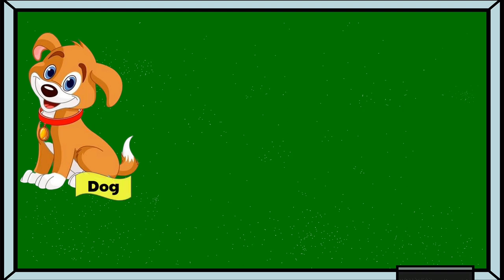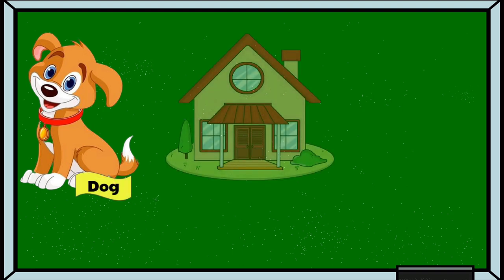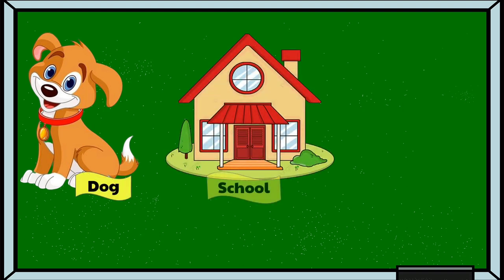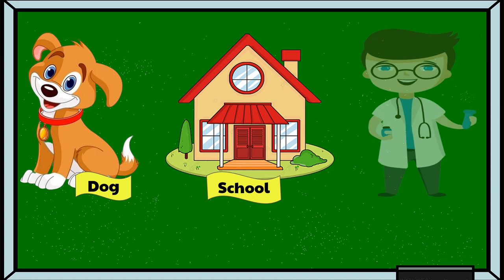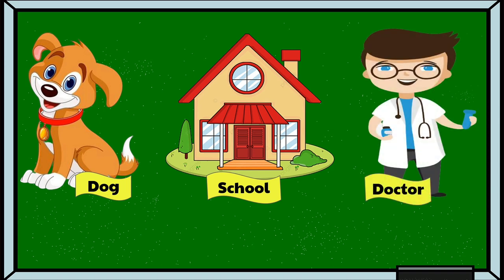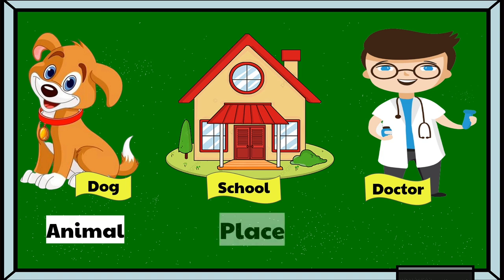Dog. School. Doctor. Dog is an example of animal. The school is an example of place. And the doctor is an example for person.